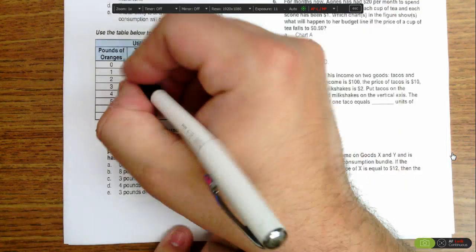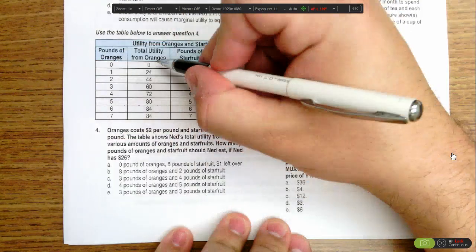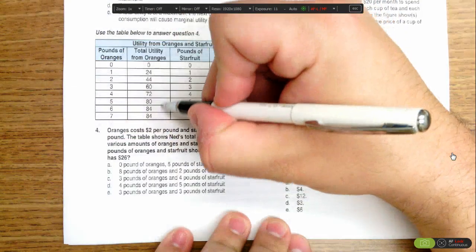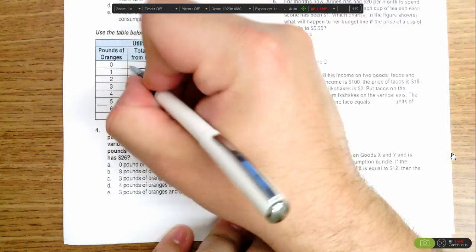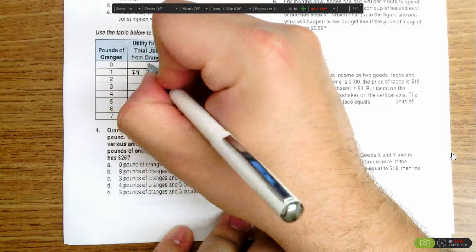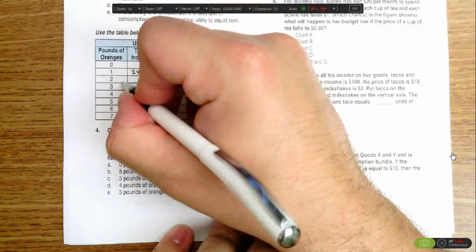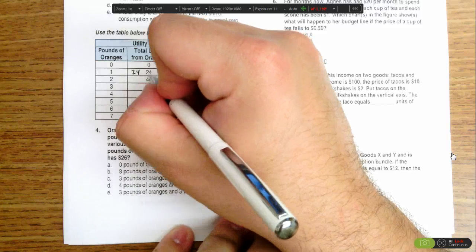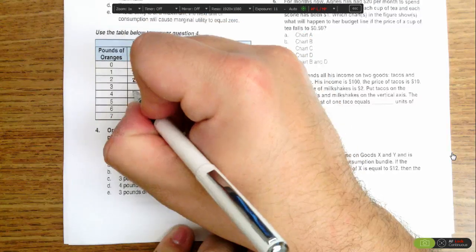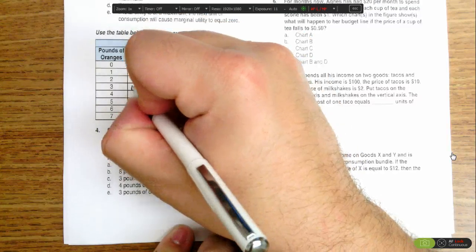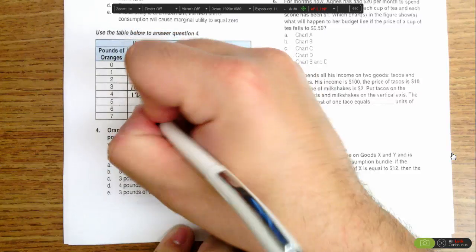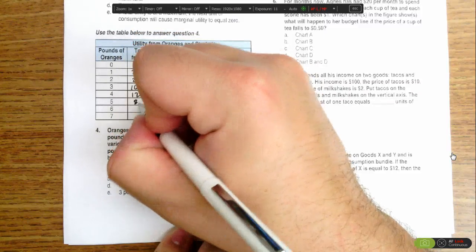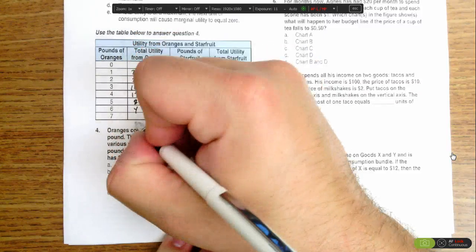So what I do is I usually write on one side what marginal utility is and then I figure out my marginal utility per dollar spent on the other side. So here we've got 24 as the marginal utility when I go from 0 to 1. When I go from 1 to 2, the marginal utility is 20 because it's 20 more than what I had before. For the third it's going to be 16, for the fourth it's 12, for the fifth it's 8, for the sixth it's 4, for the seventh it's 0.